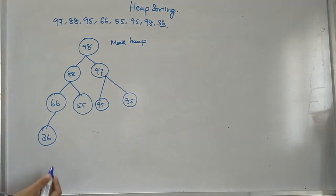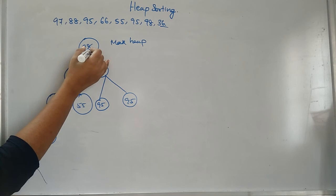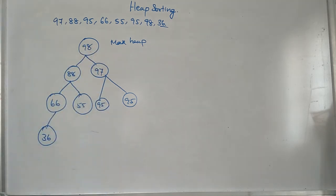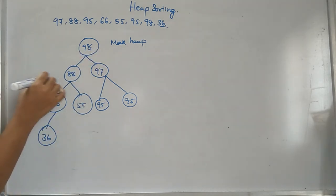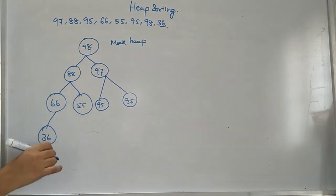It can be a max heap or it can be a min heap. Here I have represented it using the max heap. If it is a min heap, the minimum number should be present in the parent node. That means the value present in the parent node must be less than or equal to the values present in its child nodes. So that's all about the representation of heap.